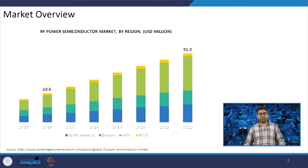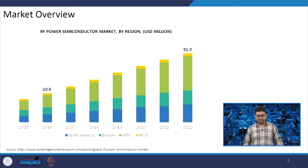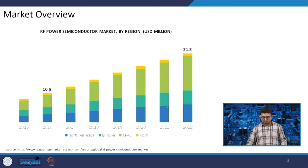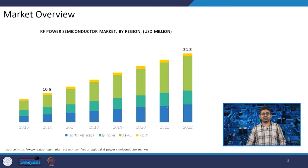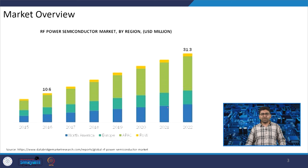Looking at the market overview: this graph shows data for 2022 and only for the power semiconductor market. It shows around 31.3 million US dollars in that economy. The RF power semiconductor industry has a big impact, and this course will also deal with some of the power devices and how we can design power amplifiers and receivers.